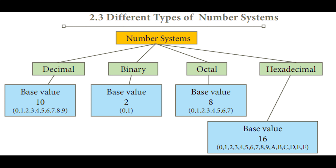Decimal number system means the same numbers which we use in our mathematics — 0, 1, 2, 3, 4, 5, 6, 7, 8, 9, 10, 11, and everything. That is decimal number system. Binary number system — 'bi' means 2, so only 2 numbers will be there. The base is 2 and the numbers included in the binary number system are 0 and 1.